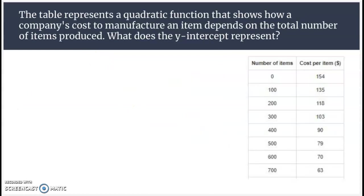Let's look at the table here. The table represents a quadratic function that shows how a company's cost to manufacture an item depends on the total number of items produced. What does the y-intercept represent? Well, if you think about y-intercepts, they all have x-coordinates of 0. And I think that's what's going on here. Think of this first column as our x, think of the second column as the y-coordinates.